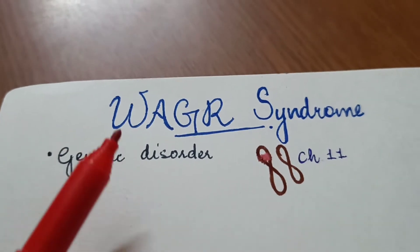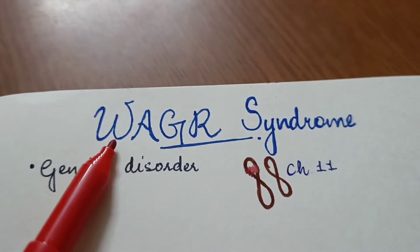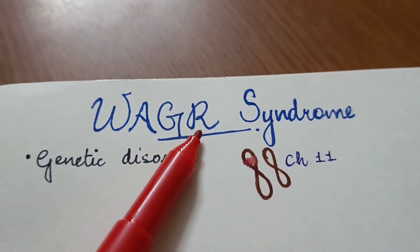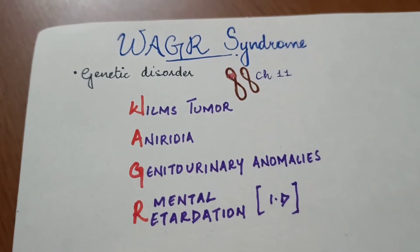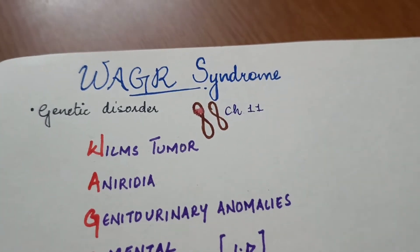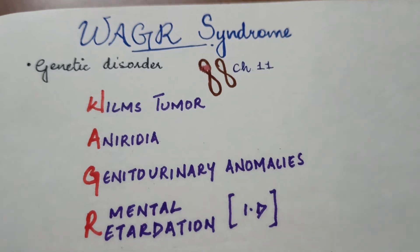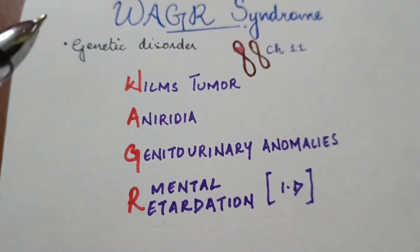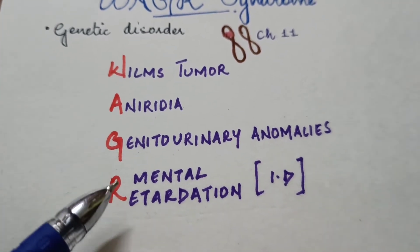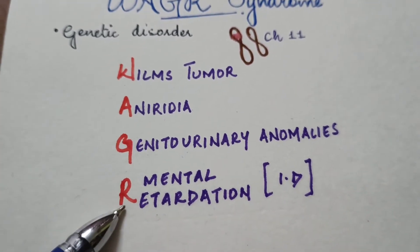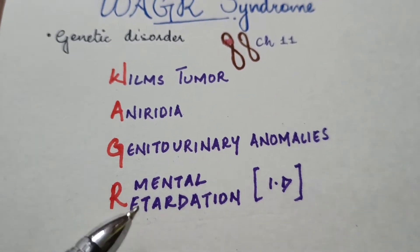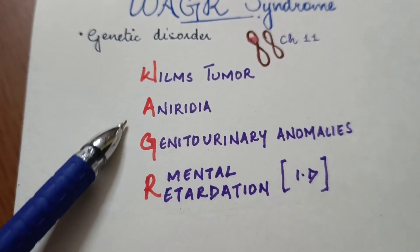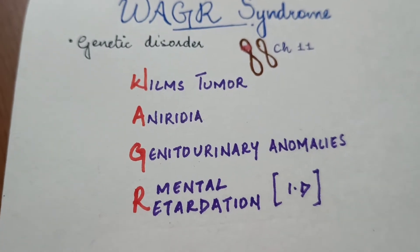Let's look at the full form of WAGR syndrome. W stands for Wilms tumor, A for aniridia, G for genitourinary anomalies, and R for mental retardation — now referred to as intellectual disabilities. That is the full form of WAGR syndrome.